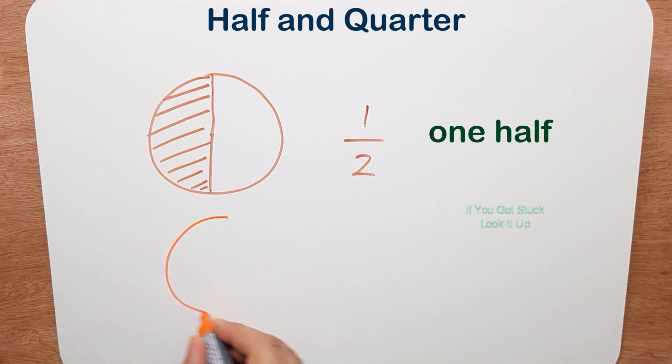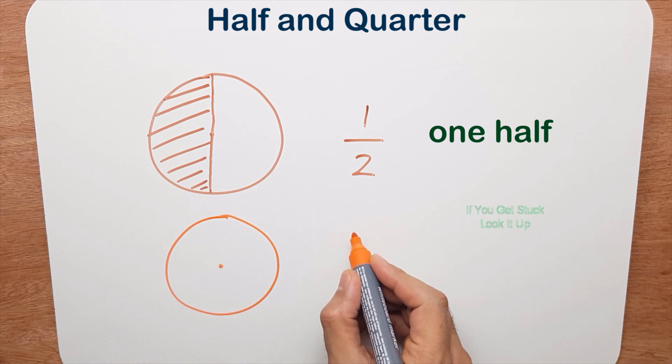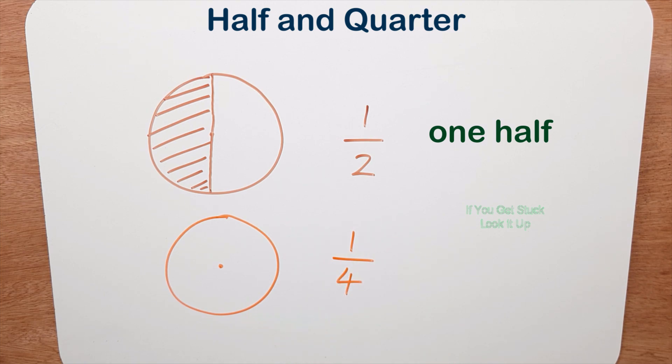So let me draw another pizza. There's the center. And this time I'm going to do one quarter or one fourth. So I look at the bottom number, the denominator, and that tells me how many pieces I'm going to cut it into. So I need to cut it into four equal pieces.